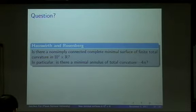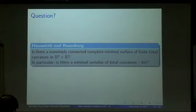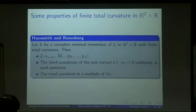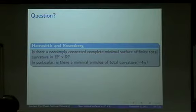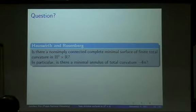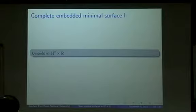We already know that the vertical plane has total curvature zero, the four-edge Scherk-type surface has total curvature −2π, and the six-edge case has total curvature −4π. So for each value we already have examples, but all of these are simply connected. The question of Hauswirth and Rosenberg is: is there a non-simply connected complete minimal surface of finite total curvature in H² × ℝ? In particular, is there a minimal annulus of total curvature −4π, analogous to the catenoid in Euclidean space?